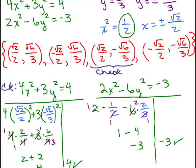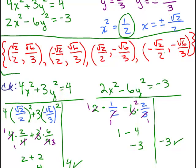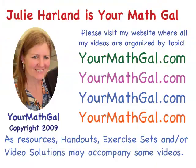That means we really do have the correct solution. There are 4 ordered pairs. This is YourMathGal, Julie Harland. Please visit my website at yourmathgal.com, where all of my videos are organized by topic.